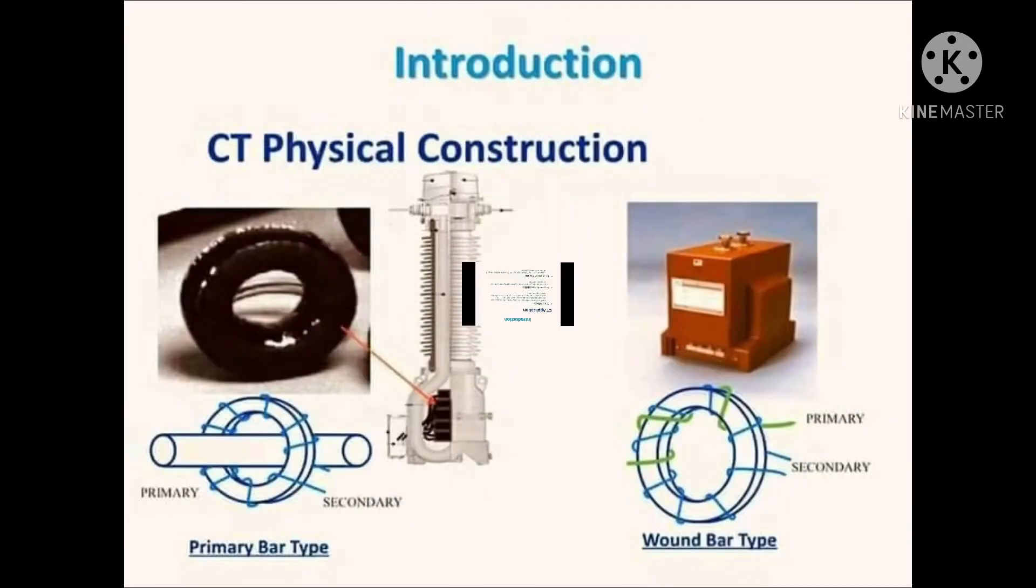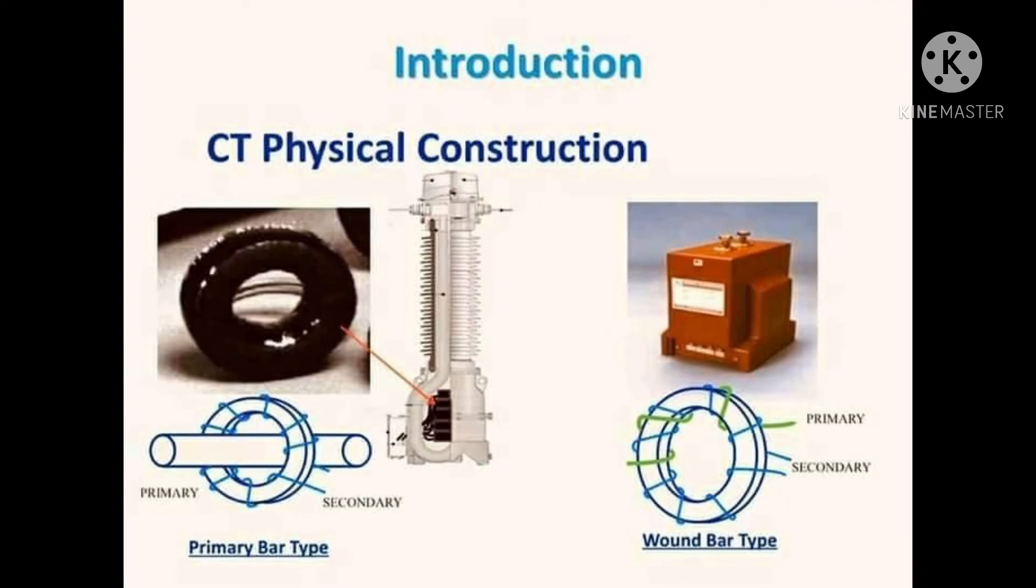Circuit current flows through its primary winding. When the current transformer works, its secondary circuit keeps closed. Therefore, the impedance of the series coil of measuring instrument and protection circuit are very small. The working state is close to short circuit.